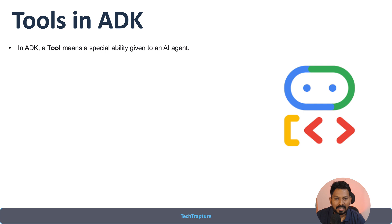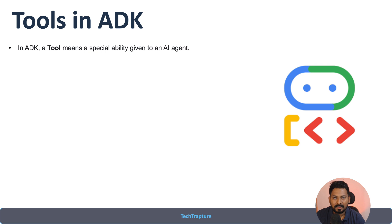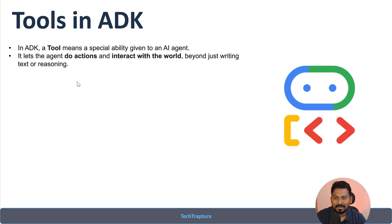First, let's understand what tools are in ADK. In ADK, a tool means a special ability given to an AI agent. For example, if I ask Gemini about BigQuery it can help, but if I ask it to query my BigQuery table data, it won't be able to answer because it does not have any external integration to connect with Google BigQuery. That's where tools help. Tools let an agent take action and interact with the world beyond just writing text or reasoning. LLMs have generative, writing, and reasoning capabilities, but beyond that we can provide external world access using tools in ADK.